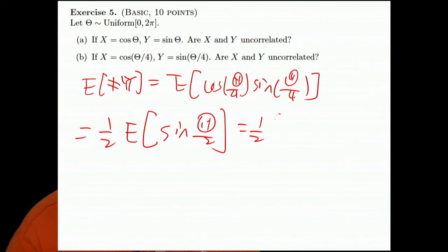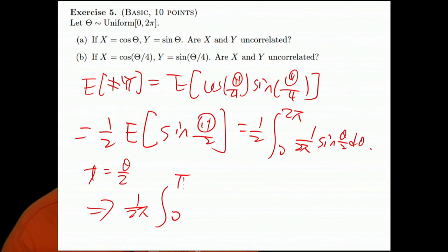This is 0 to 2 pi, 1 over 2 pi sine theta over 2, d theta. If we let t equals theta over 2, then I will have 1 over 2 pi integral 0 to pi sine t dt, which is 1 over pi. So it's correlated.